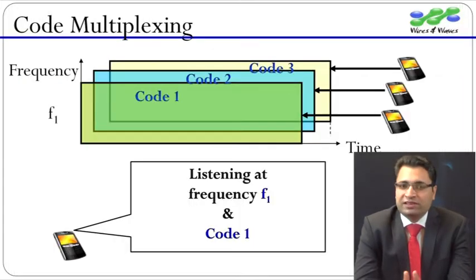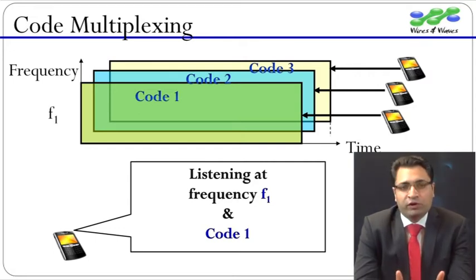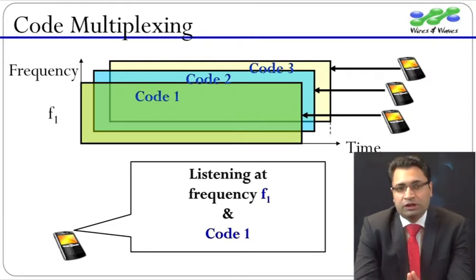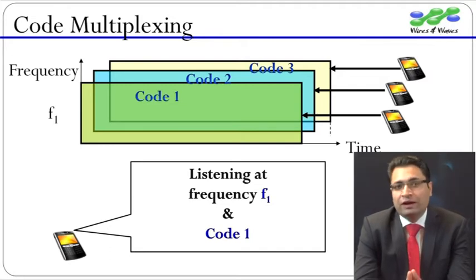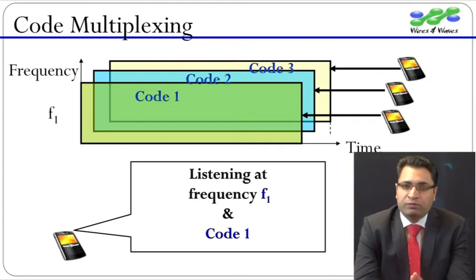Wideband CDMA is a multiple access technology which allows us to use the same radio resources for several subscribers by using different codes for each user. Alternative schemes are frequency division multiple access, time division multiple access, and orthogonal frequency division multiple access. In CDMA technology, several users are allocated the same frequency at the same time, but their signals are separated by codes, and these codes are very carefully selected and managed by RNC.